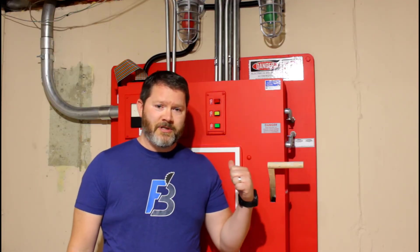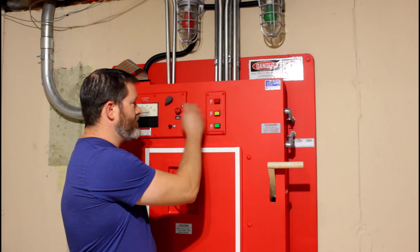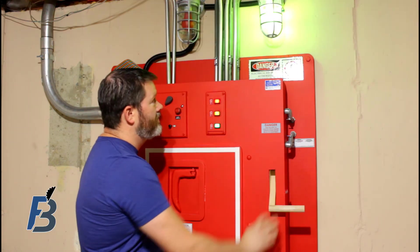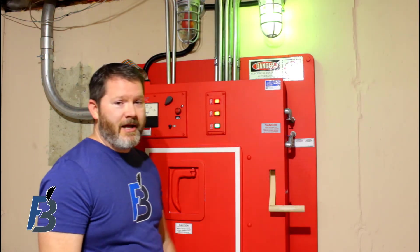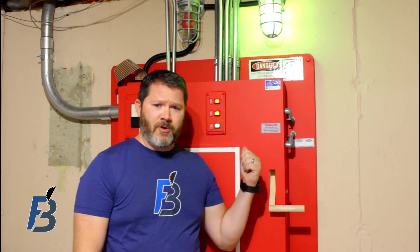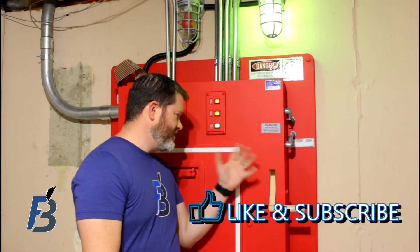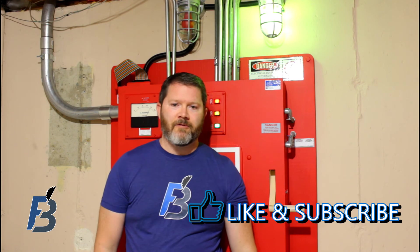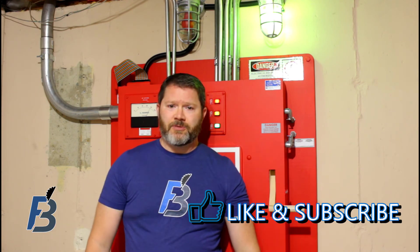So that's part two of the ecto-containment unit build. Now everything's wired, no delays, and it's reliable. It'll fire every time. So that's for part two. Part three, we're actually going to go through and weather this, make it look a little more grimy using some acrylic paints and some oil paints, just to add a little bit of age like it's been here for a minute. And check that out. It should be coming in the next few weeks. Appreciate it. See you next time.